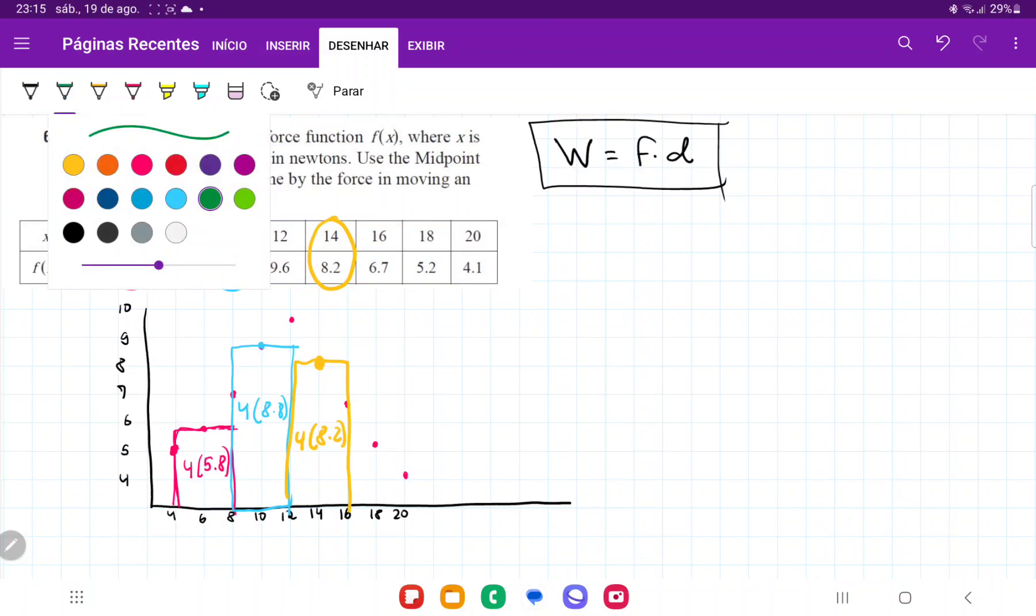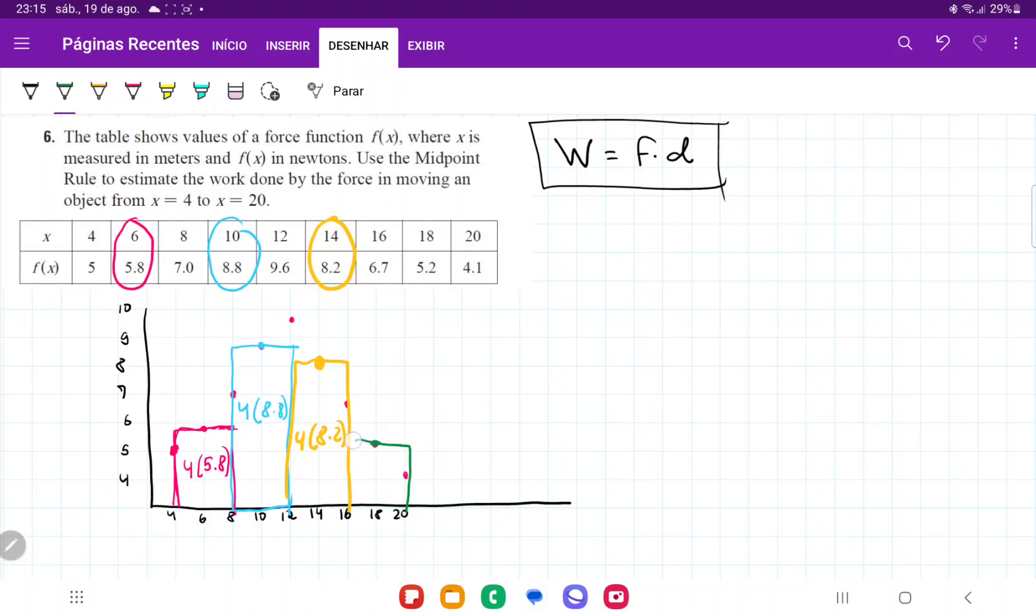And lastly, we're going to have this last midpoint here, which we extend out. It's the midpoint at 18. Force times distance—our distance goes from 16 to 20, so that's 4, and the force is 5.2 newtons.